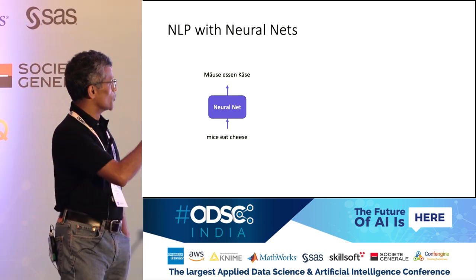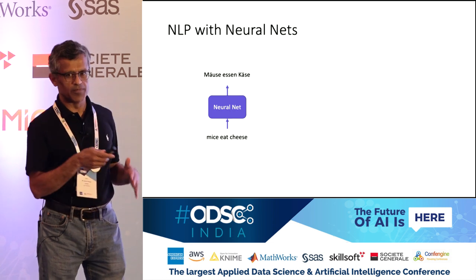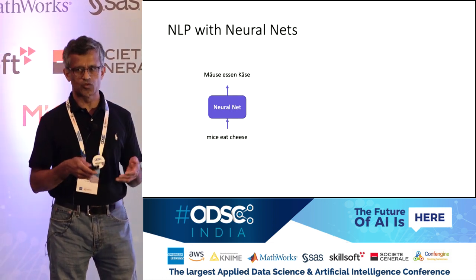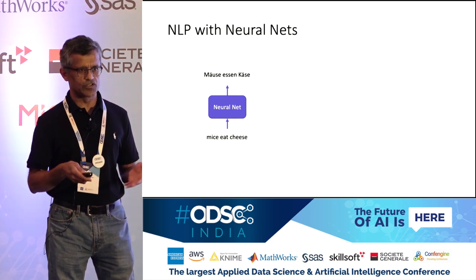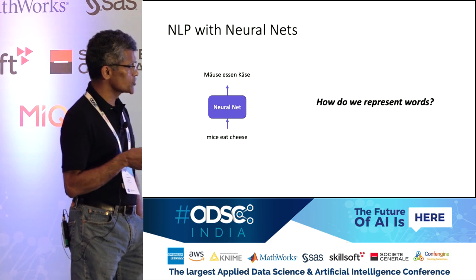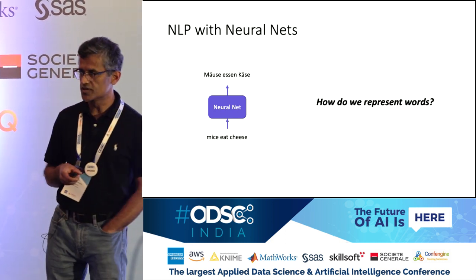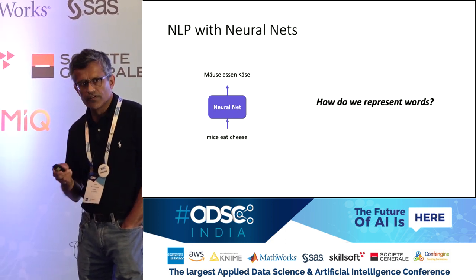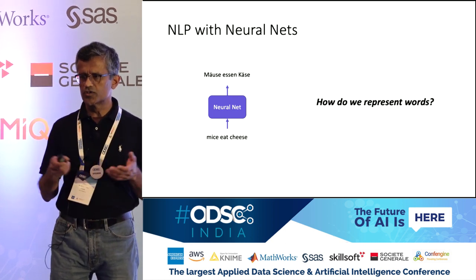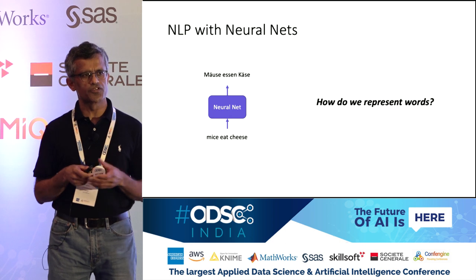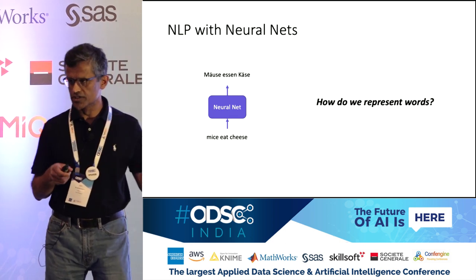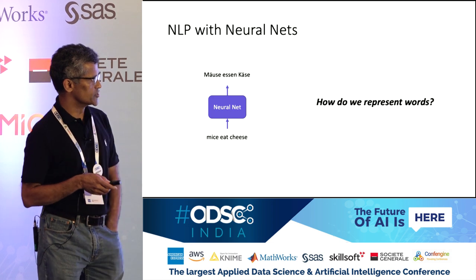I wanted to give you some motivation: this is a black box, and for different types of applications this black box will look different. Today our black box is going to be an encoder-decoder model. Let's start with how we represent words. For a general encoder-decoder model you probably don't care about word representation, but since I'm taking natural language processing as an example application, it's a good idea to start with this.